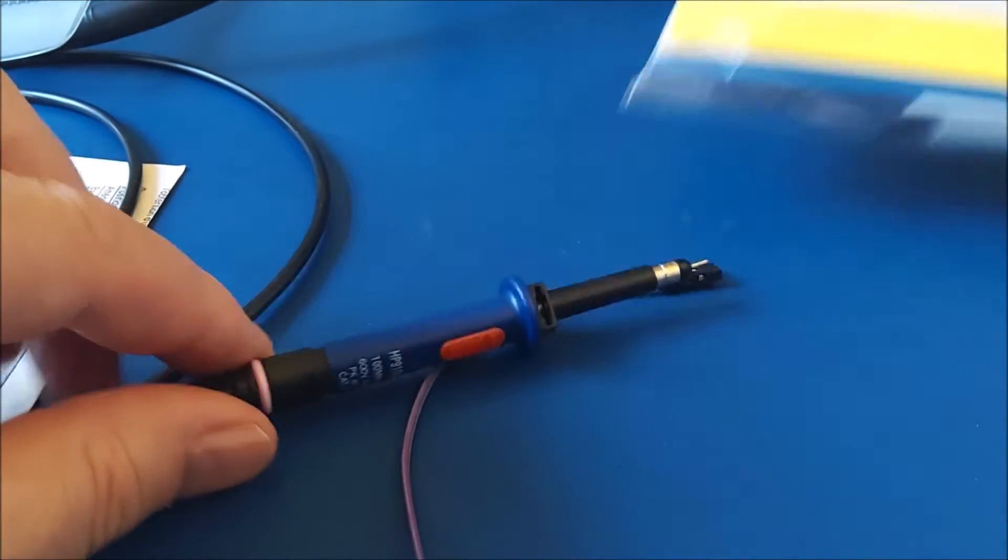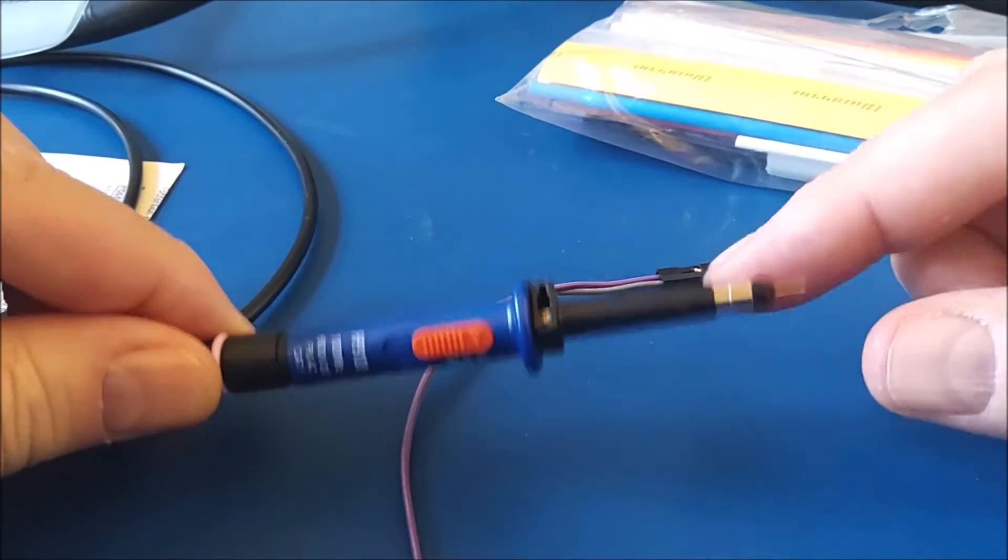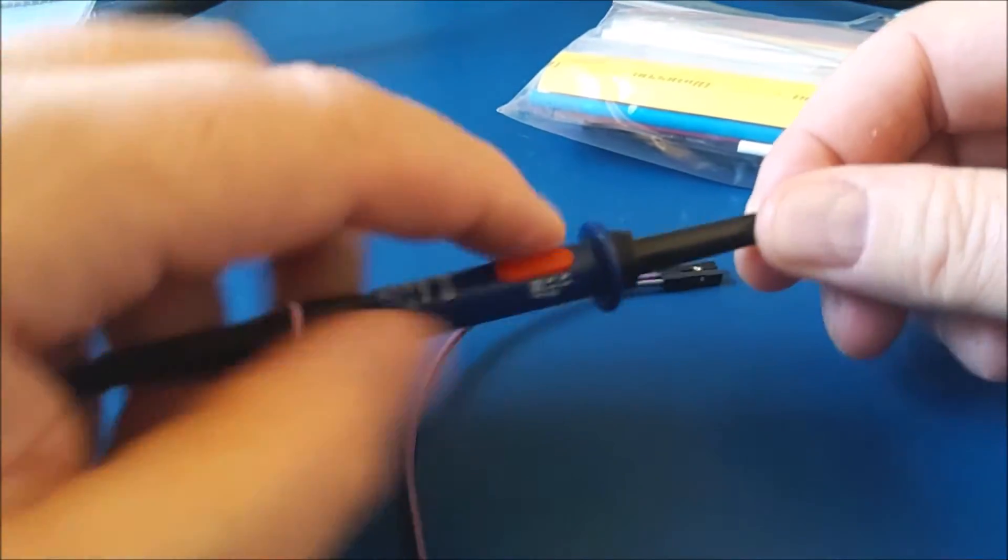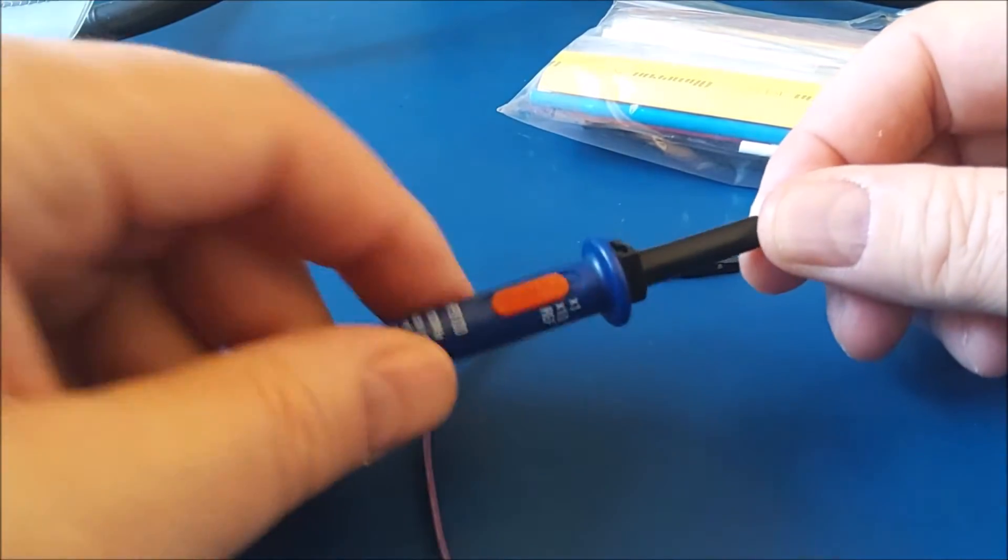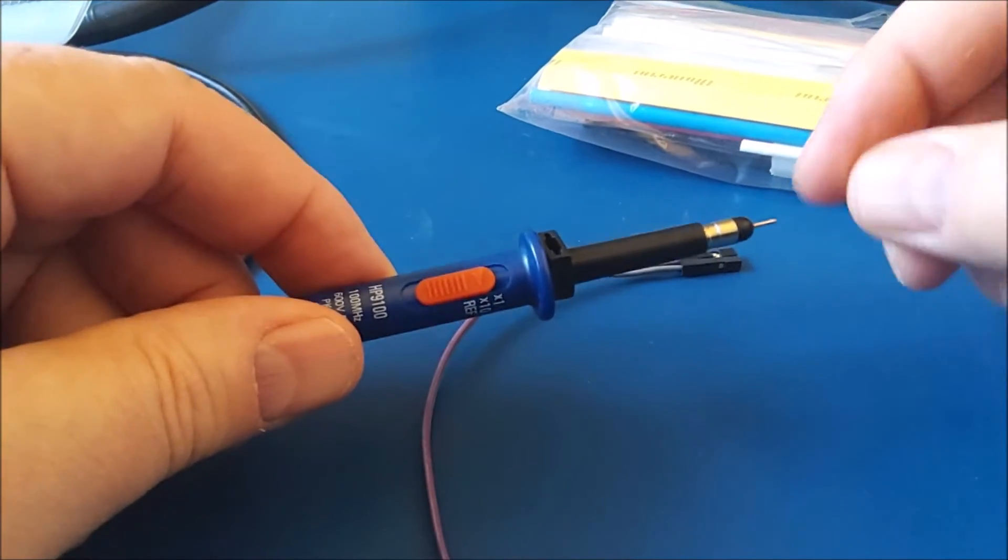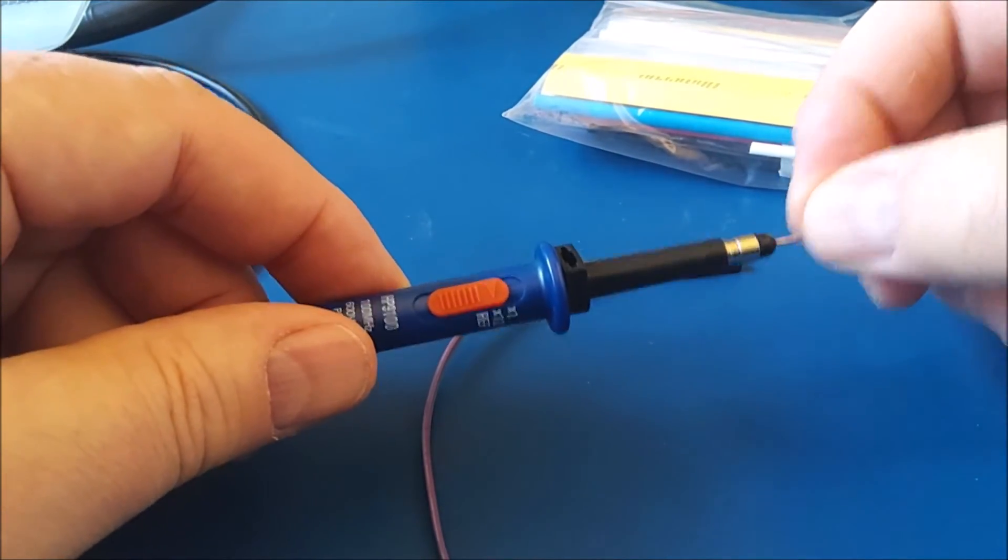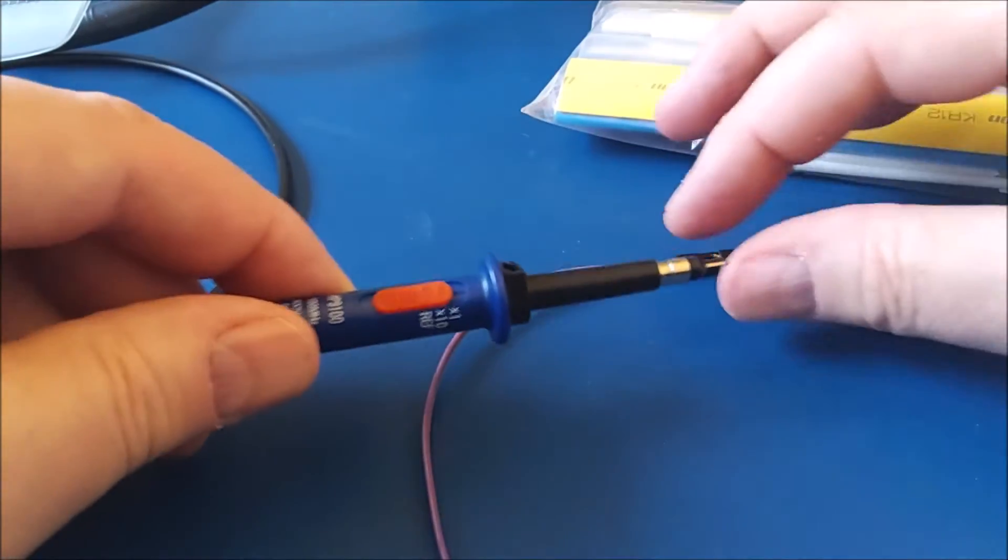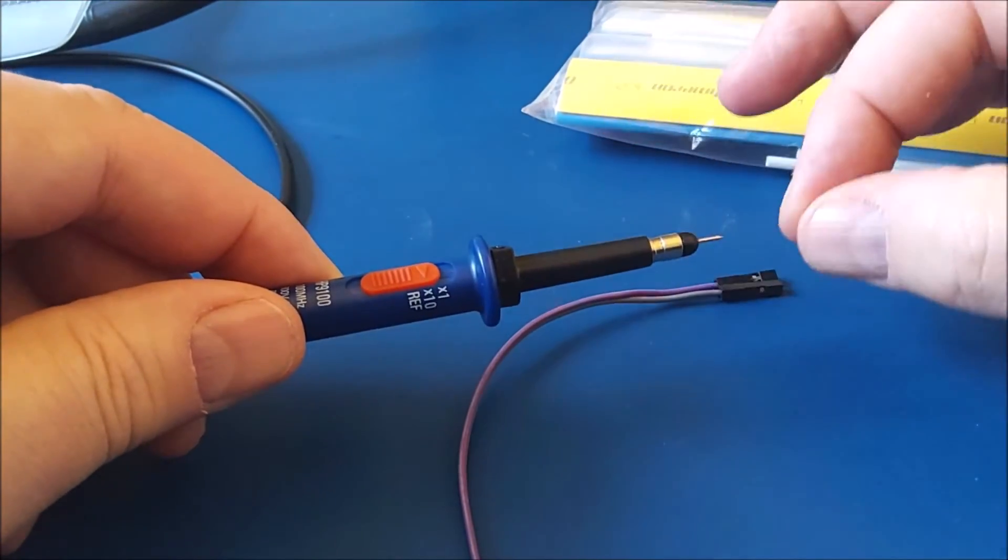I've used heat shrink to keep things in place. The advantage is that you still have the 10x resistor in the header—you don't have to invent your own divider or solder in a little resistor. Also, if you cut away the heat shrink later, you still have your probe intact.